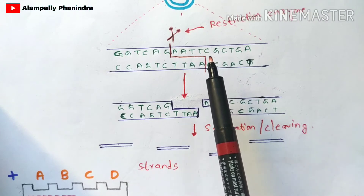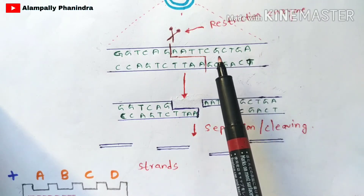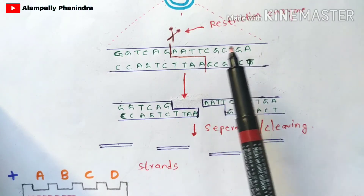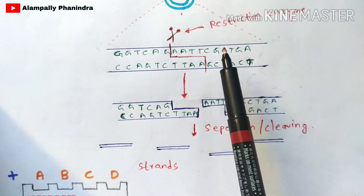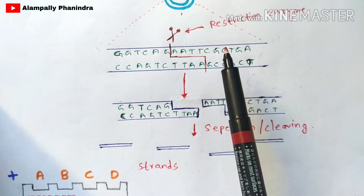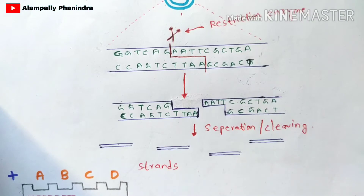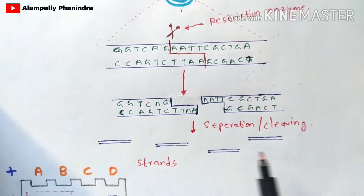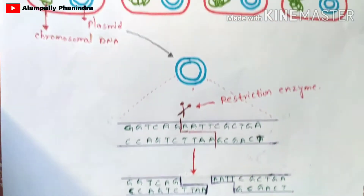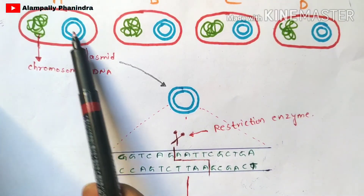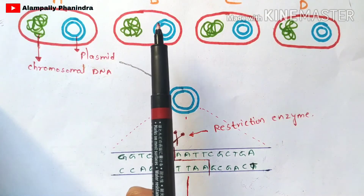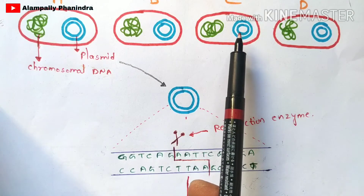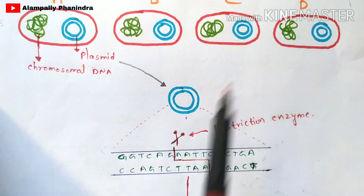The best example of a restriction enzyme is EcoR1, among many others. A video explaining the total mechanism of restriction enzymes has already been uploaded, and the link will be given in the description box. The strands obtained after cleavage belong to bacterium A, and the same procedure will be done for bacteria B, C, and D as well.